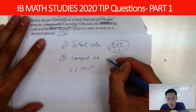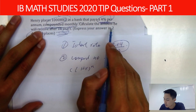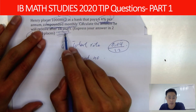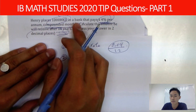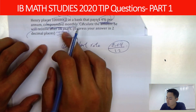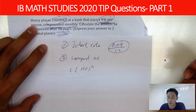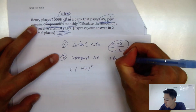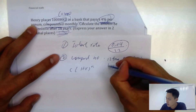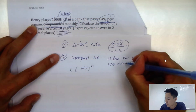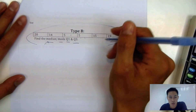For the compound number: Henry receives the amount after 10 years, compounded monthly. That means 12 times per year, so over 10 years that's 120 compounding periods total.